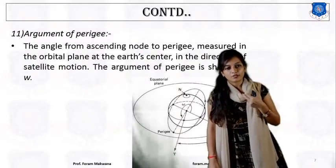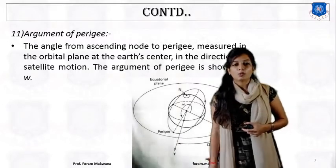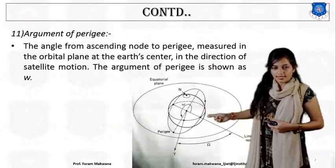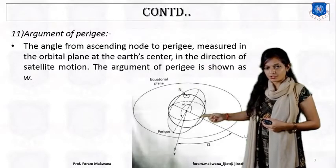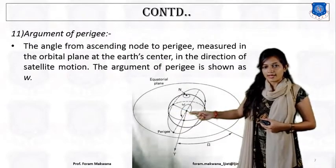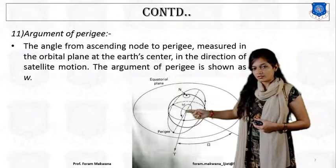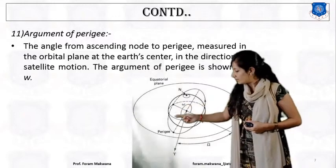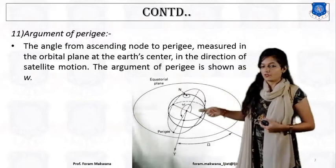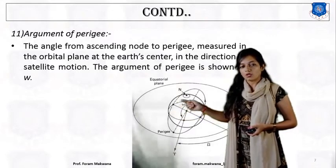This is the most important definition: the argument of perigee. What is the argument of perigee? It is the angle from the ascending node, measured in the orbital plane, to the direction of satellite motion at the earth's center. This angle is known as the argument of perigee, denoted by the symbol W (omega), as shown in the diagram.